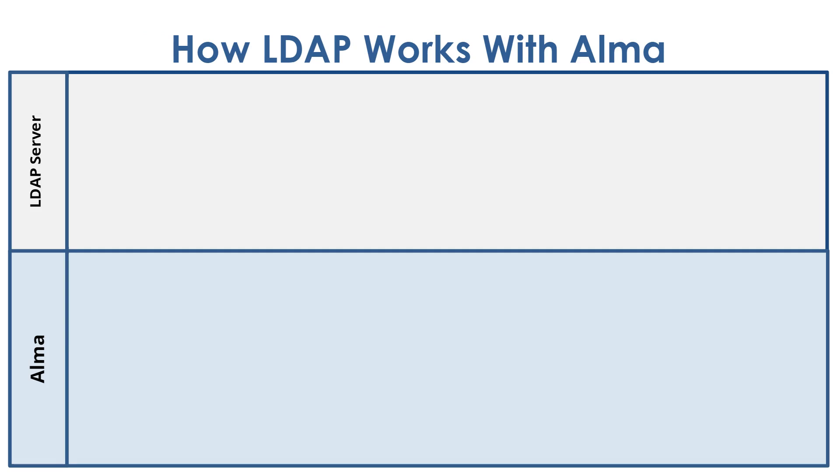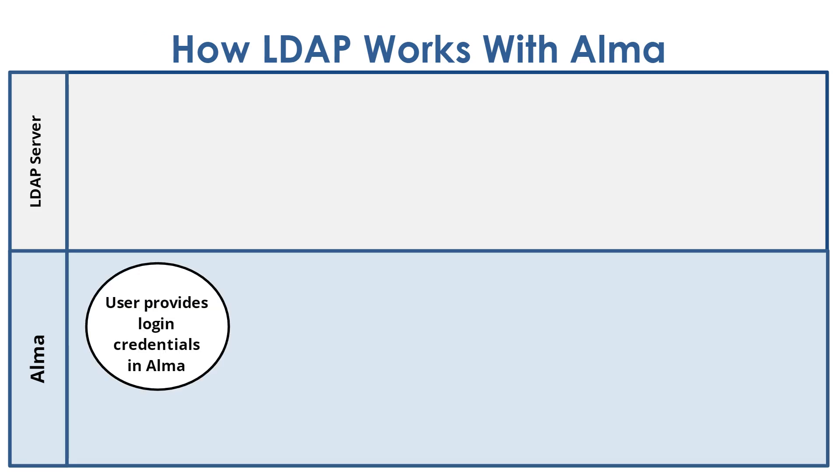The sign-in process begins when a user attempts to log into Alma. Alma then redirects the user request to the LDAP server or servers to see if the user exists and their credentials are correct. Up to five LDAP servers can be configured to search.